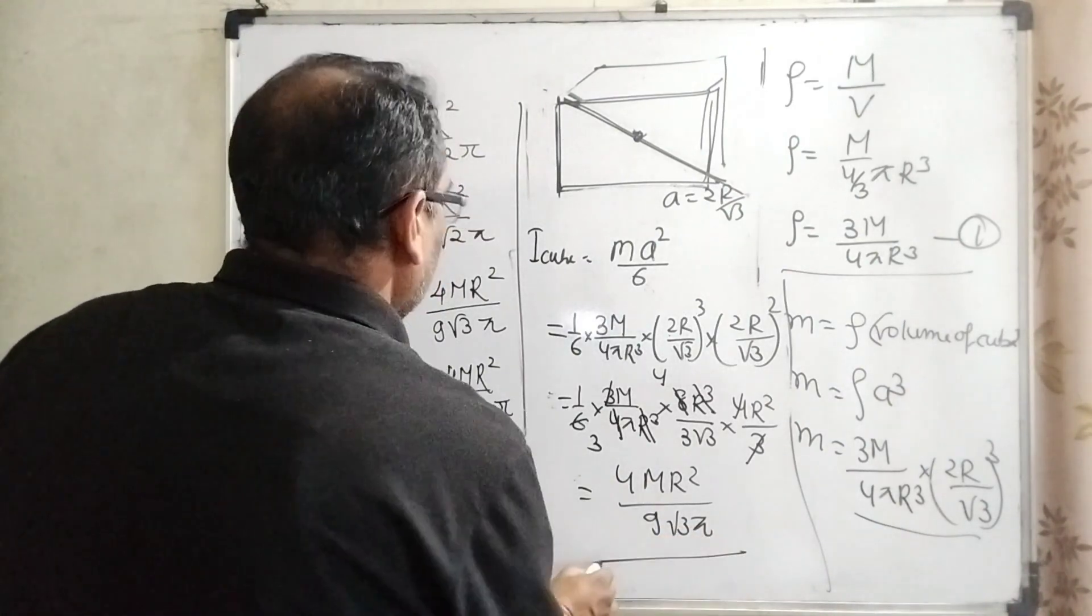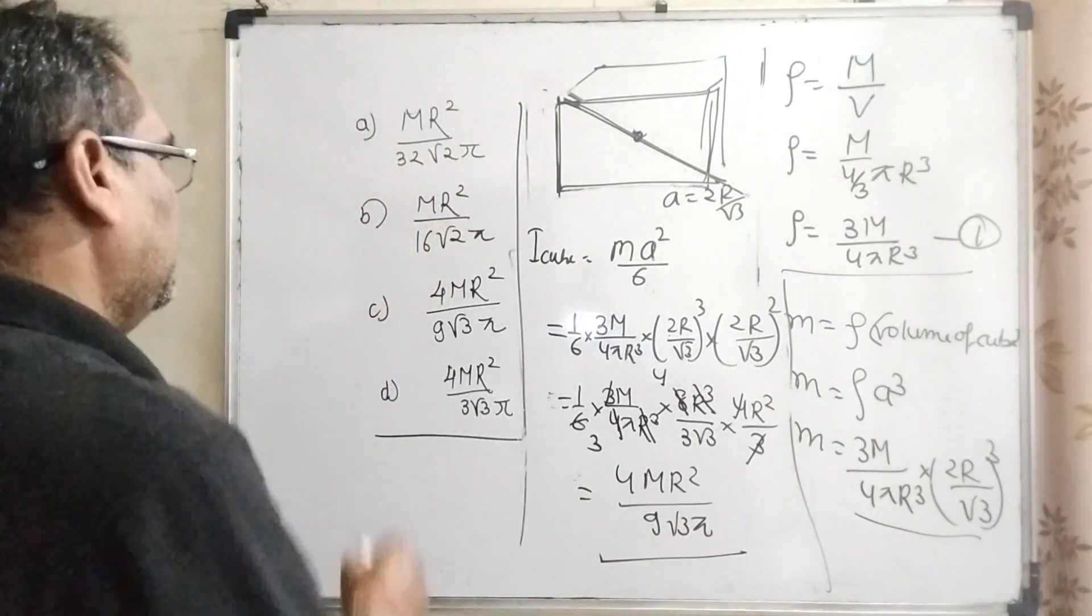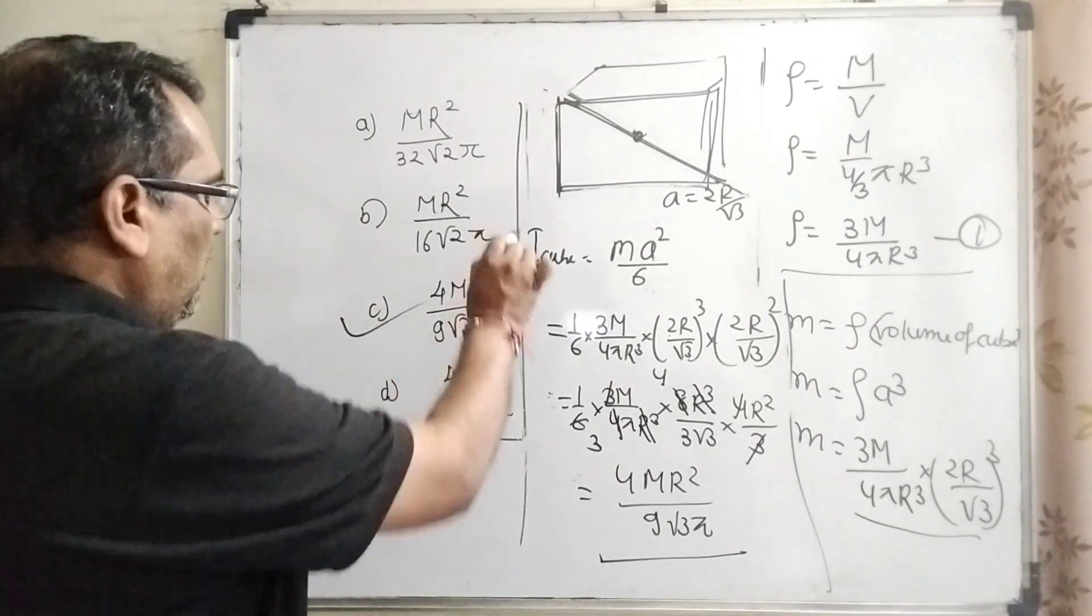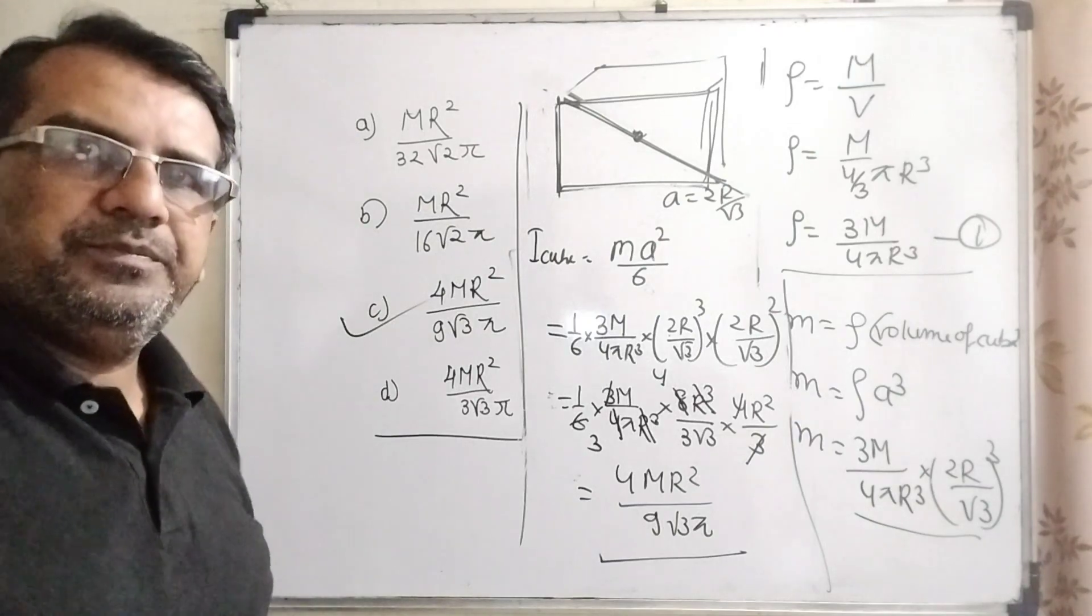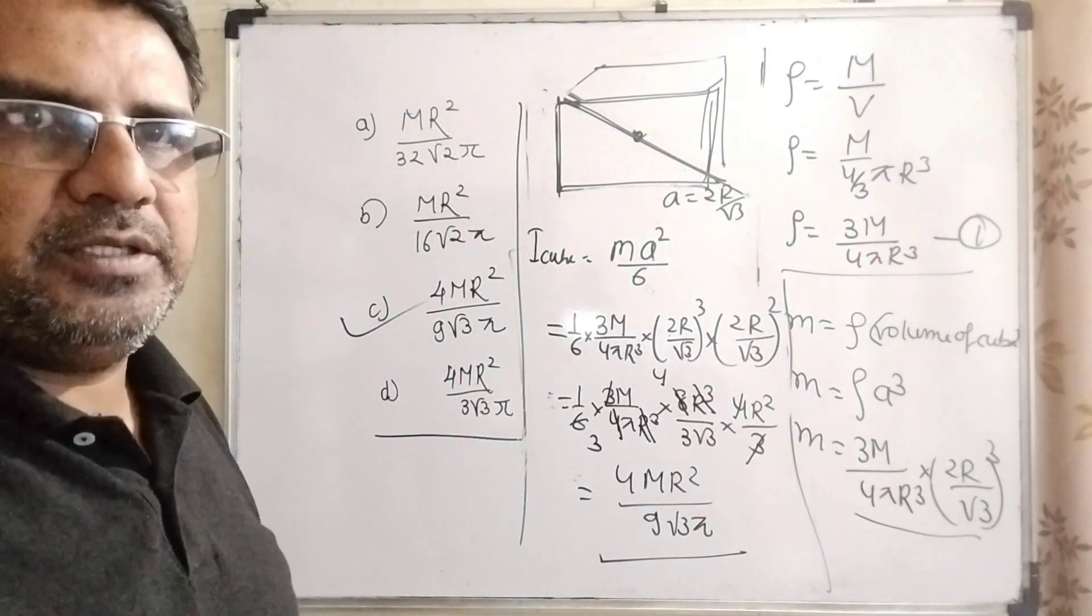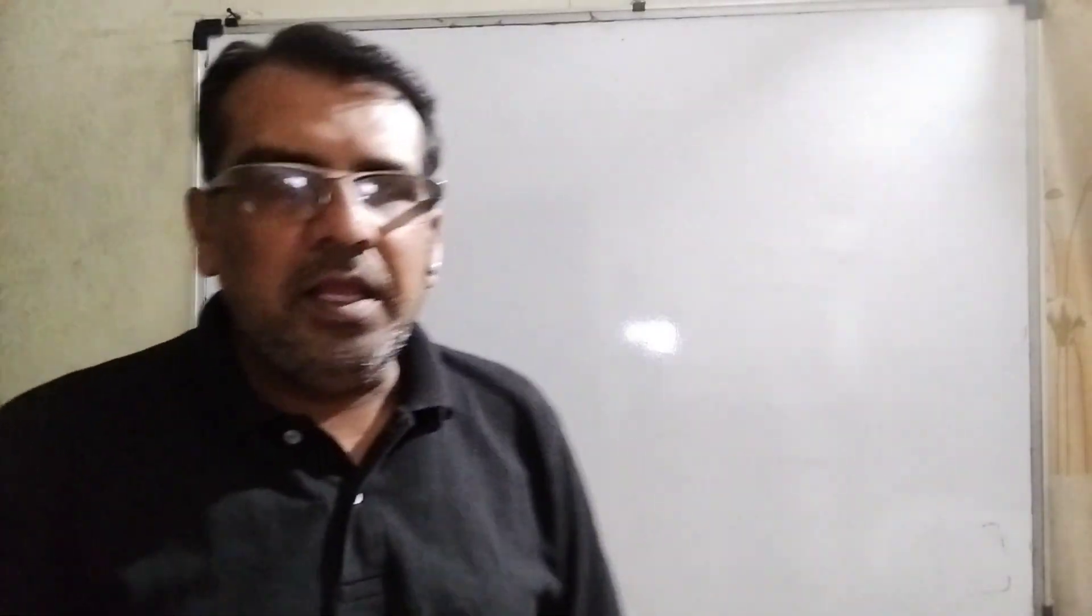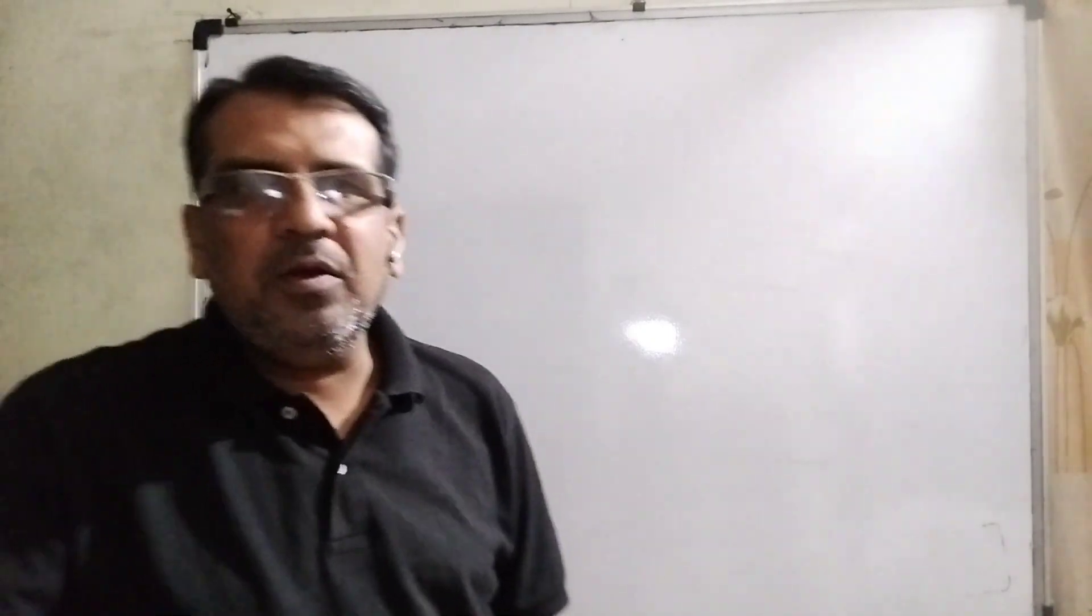Now let's see which option matches here. You can see that the third option is the correct answer: 4MR²/(9√3π). I hope you understand this question. Thank you. Again, thank you for staying till the end of this video. I hope you understand this question. And please don't forget to subscribe to my channel. Thank you. Bye-bye. Take care.